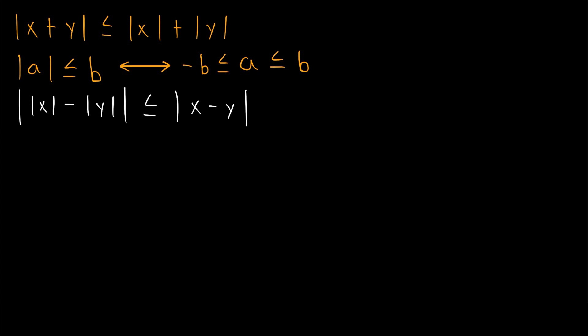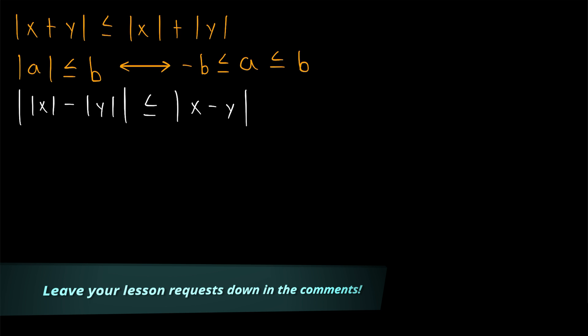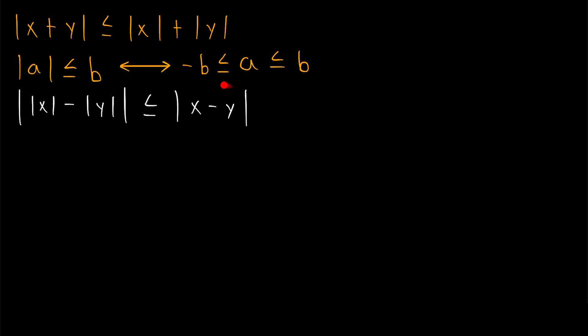The triangle inequality theorem tells us that the absolute value of the sum of two real numbers is less than or equal to the sum of the absolute values of those real numbers. In today's lesson, we'll be proving the reverse triangle inequality theorem, which tells us that the absolute value of the difference of two real numbers is greater than or equal to the absolute value of the difference of those numbers' absolute values. Both of these results also hold for elements of any ordered field, not just the real numbers.